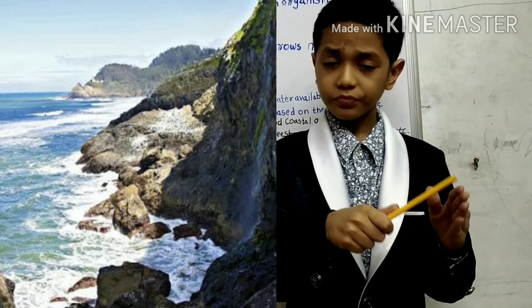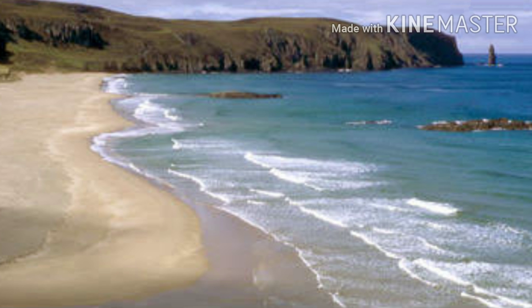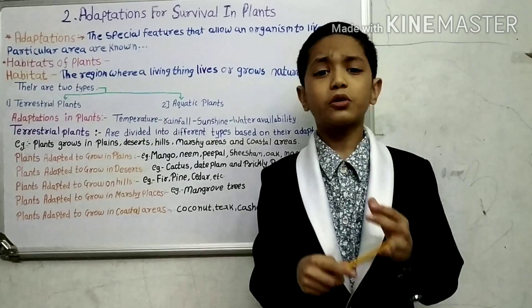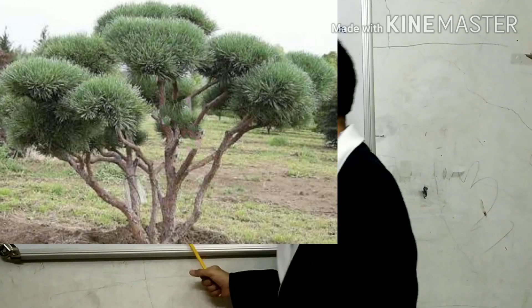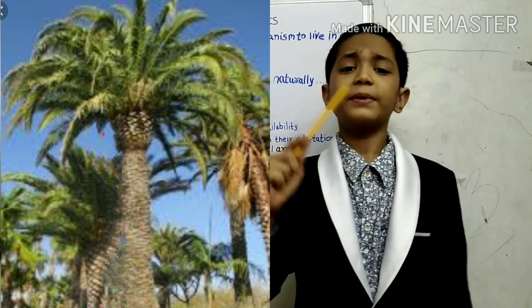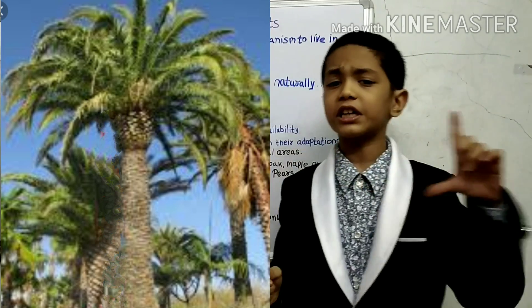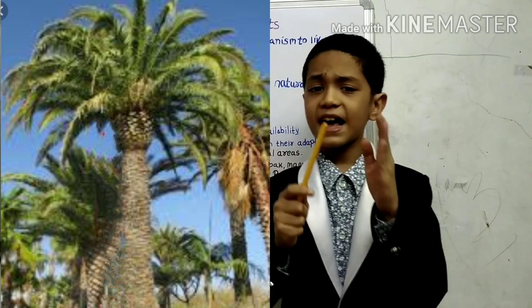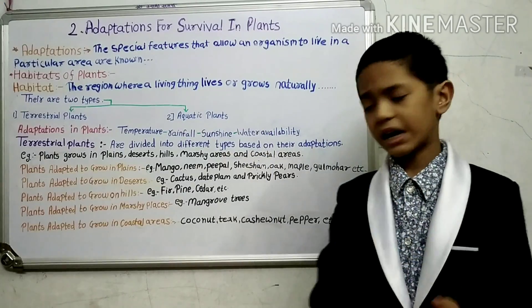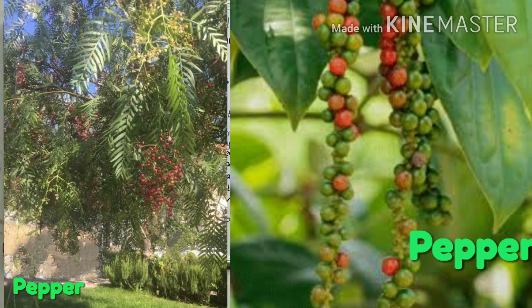In coastal areas the climate is warm and wet. Plants adapt to live in the presence of salty water. These plants have plenty of leaves and do not shed their leaves throughout the year; hence they are called evergreen plants. Examples include coconut, teak, cashew nut, and peepal.